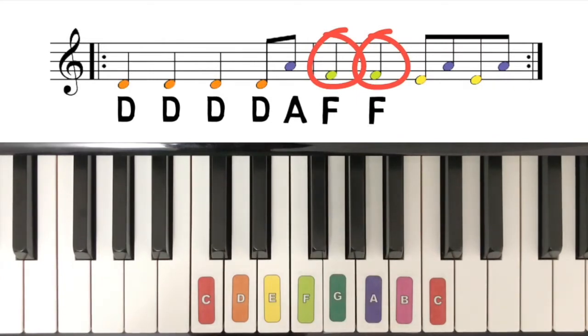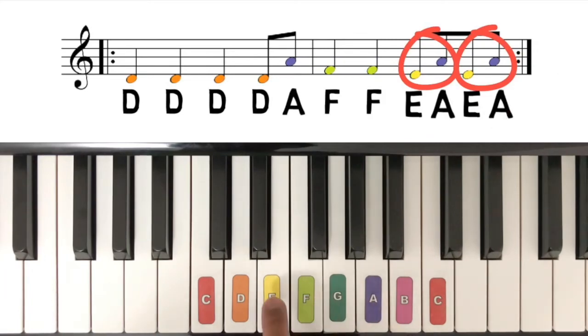And lastly, we'll go back and forth between yellow E and purple A like this.